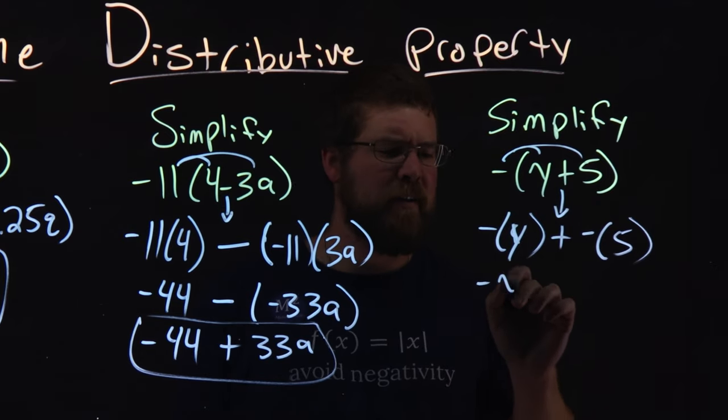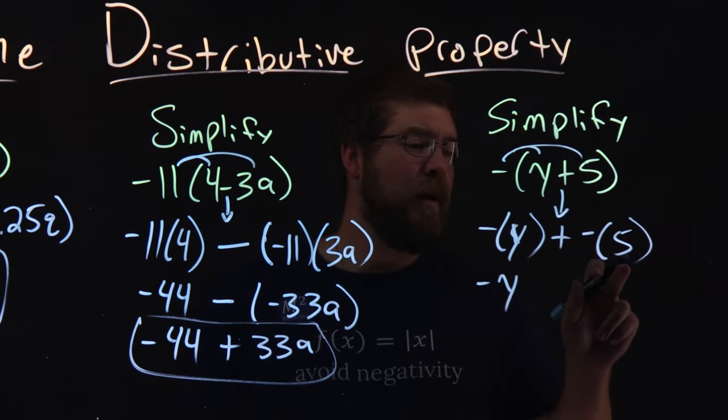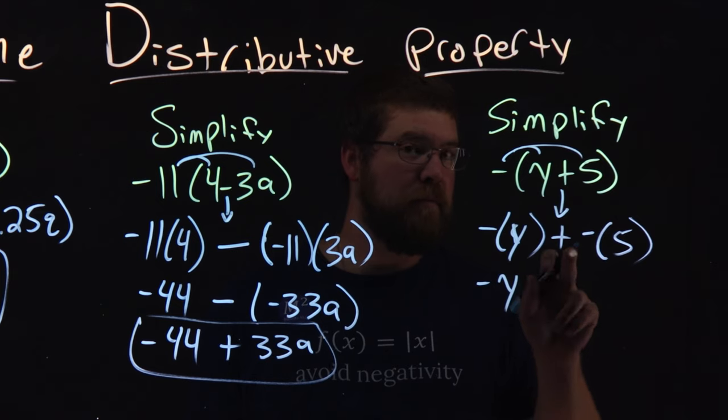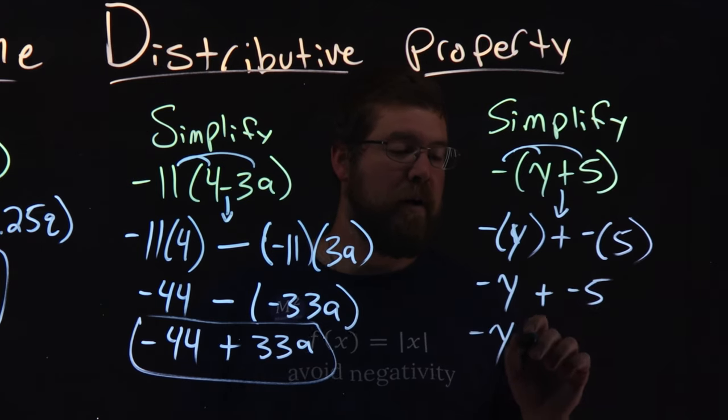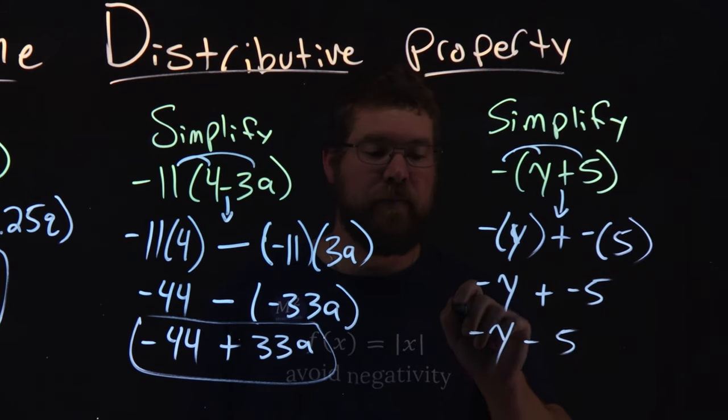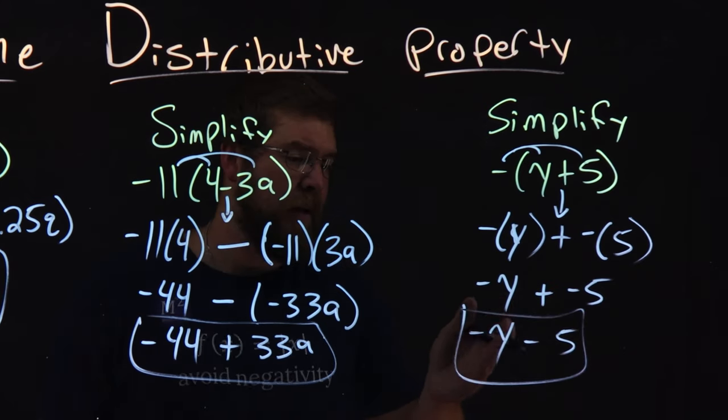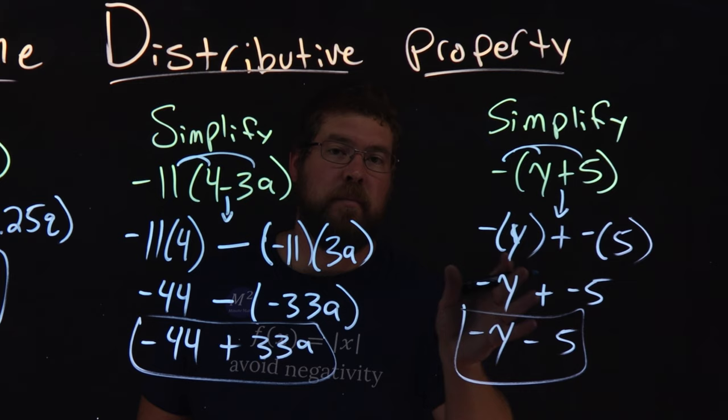Well, negative times y is just negative y. And then, a negative times 5 is negative 5, but we have plus a negative 5. So, we can rewrite this to be negative y minus 5. And there we have it. We have negative y minus 5 as that final simplification.